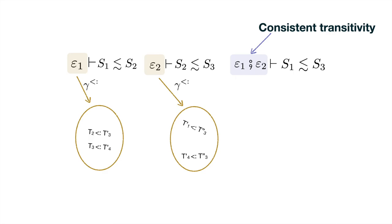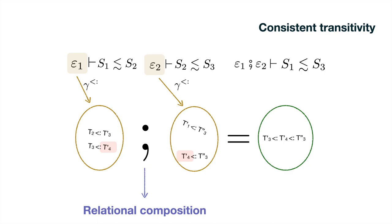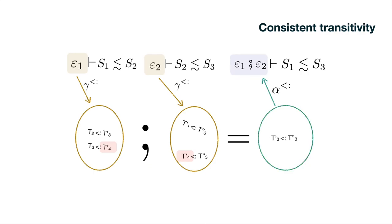AGT introduces a partial function among evidence objects called consistent transitivity. Consistent transitivity collects the transitive witnesses at the meaning level. We begin by expanding the meanings of evidence objects, and then we filter the set of pairs with equal types in the middle. This new set contains all the pairs where transitivity can be applied, and we call the operation to obtain this set relational composition. Then we can apply an abstraction partial function to produce a new evidence object. This object is the result of consistent transitivity. The meaning of this new object will contain all the subtyping judgments in the relational composition. However, the abstraction function may introduce noise, and as we mentioned before, this is a problem.